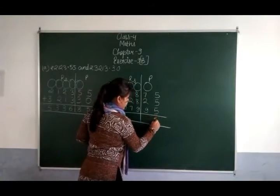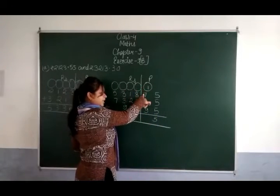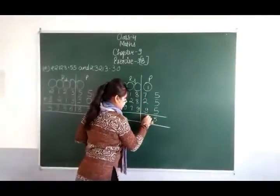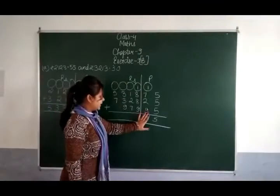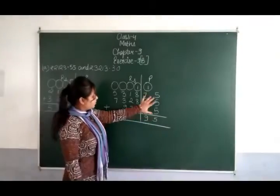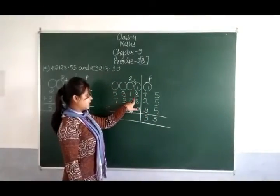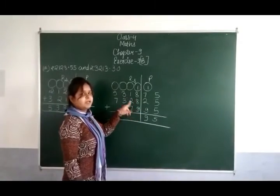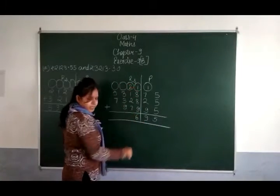15 — write 5, carry 1. 1 plus 7 is 8. 8 plus 2 is 10. 10 plus 9 is 19 — write 9, carry 1. Carry.